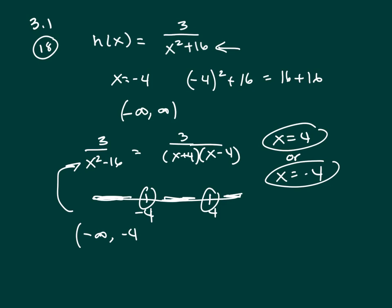You're using parentheses because you cannot include the endpoint. And then use union as a connector. Negative 4 to 4. Union. 4 to positive infinity.